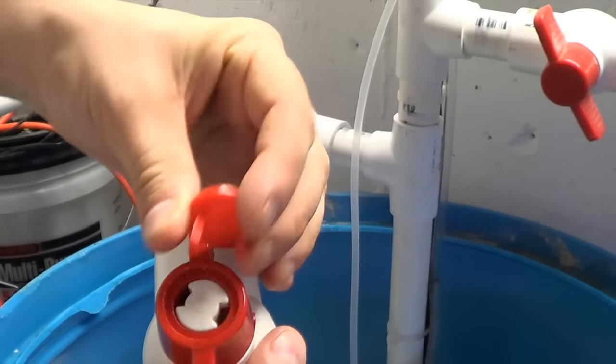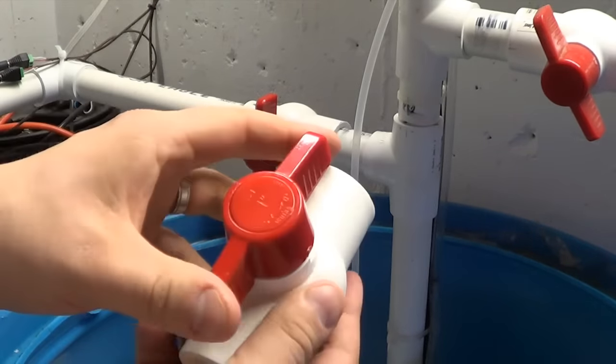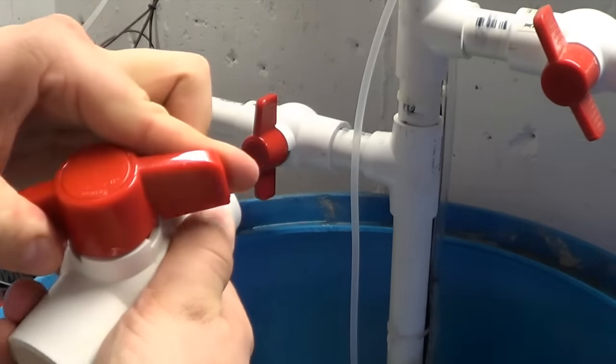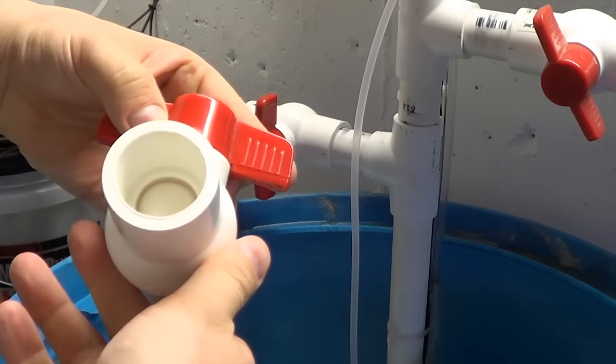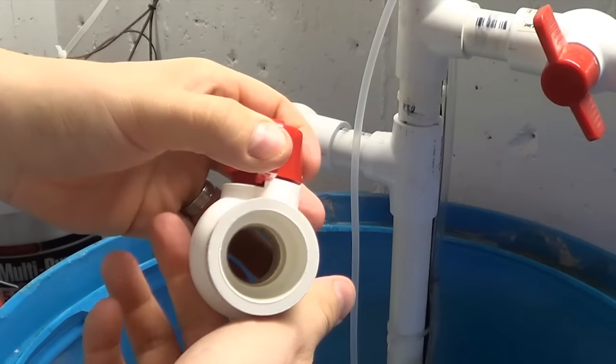And then what you can do is you can fit those two tabs back in place and you're all set. Then you can turn your ball valve as normal and there you're shut. You can turn it again and there you're open.